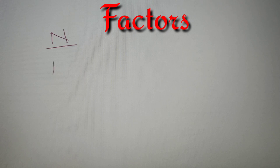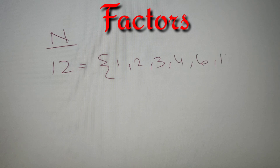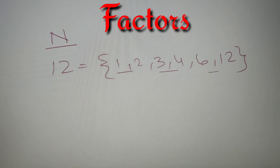For example, if I have the number 12, then all the factors of 12 are 1, 2, 3, 4, 6, and 12. These 6 numbers are factors of 12 because they are either less than or equal to 12, and they all divide the number 12.